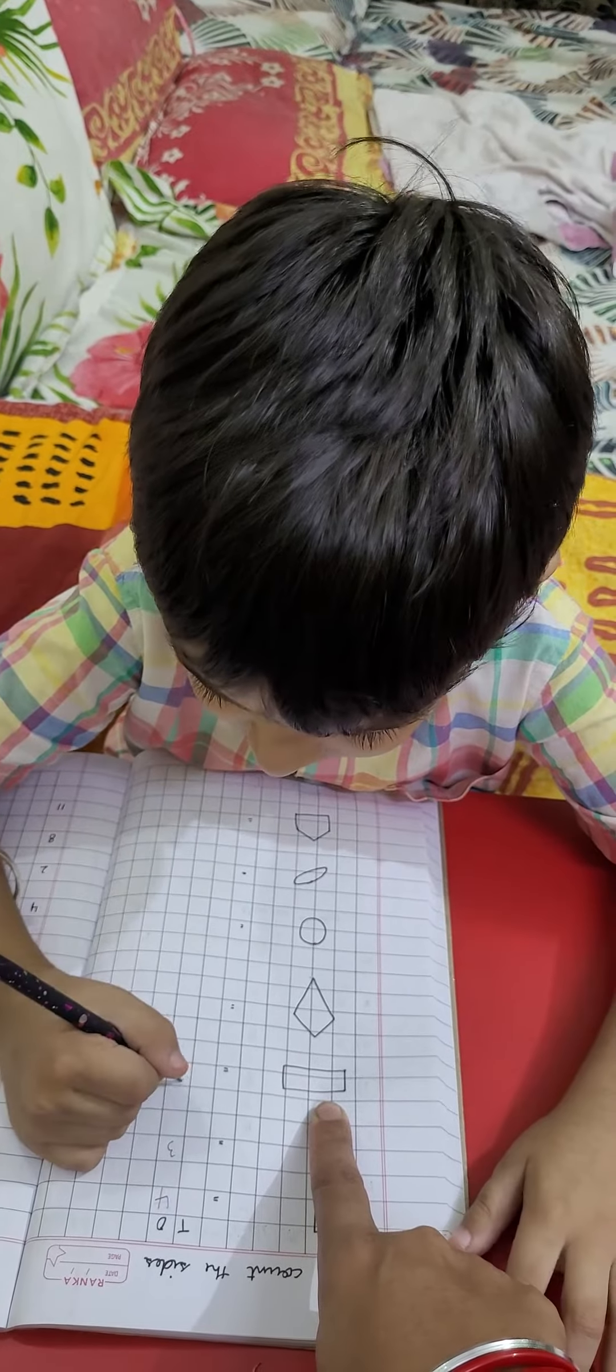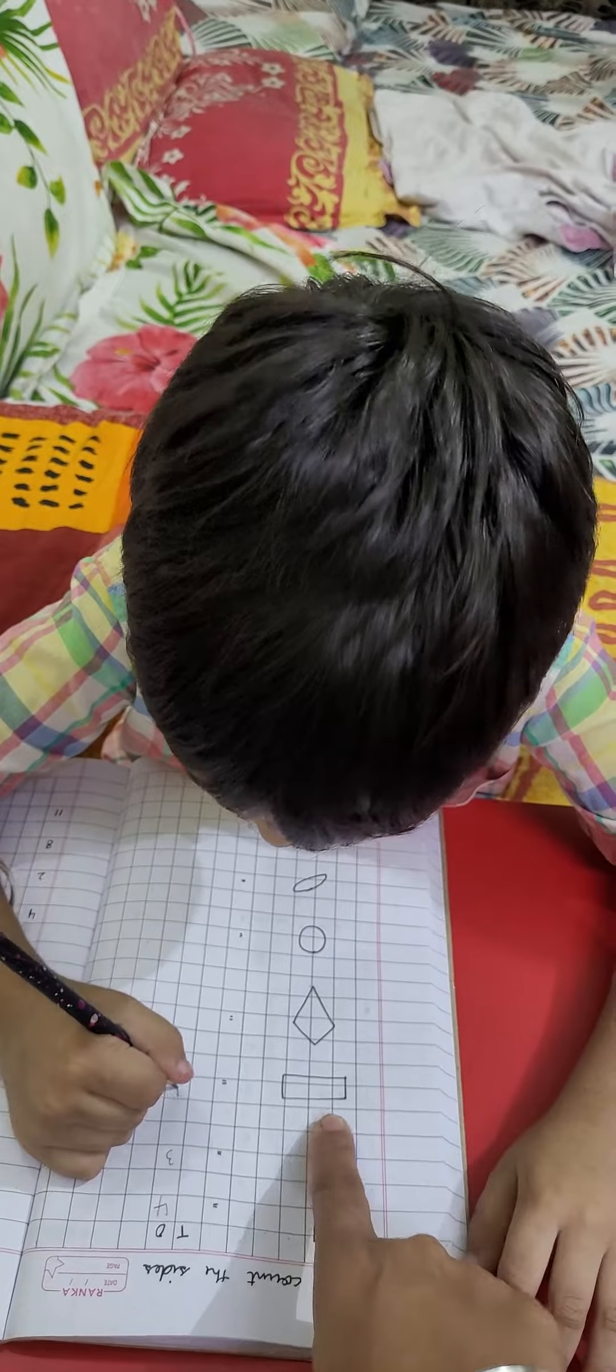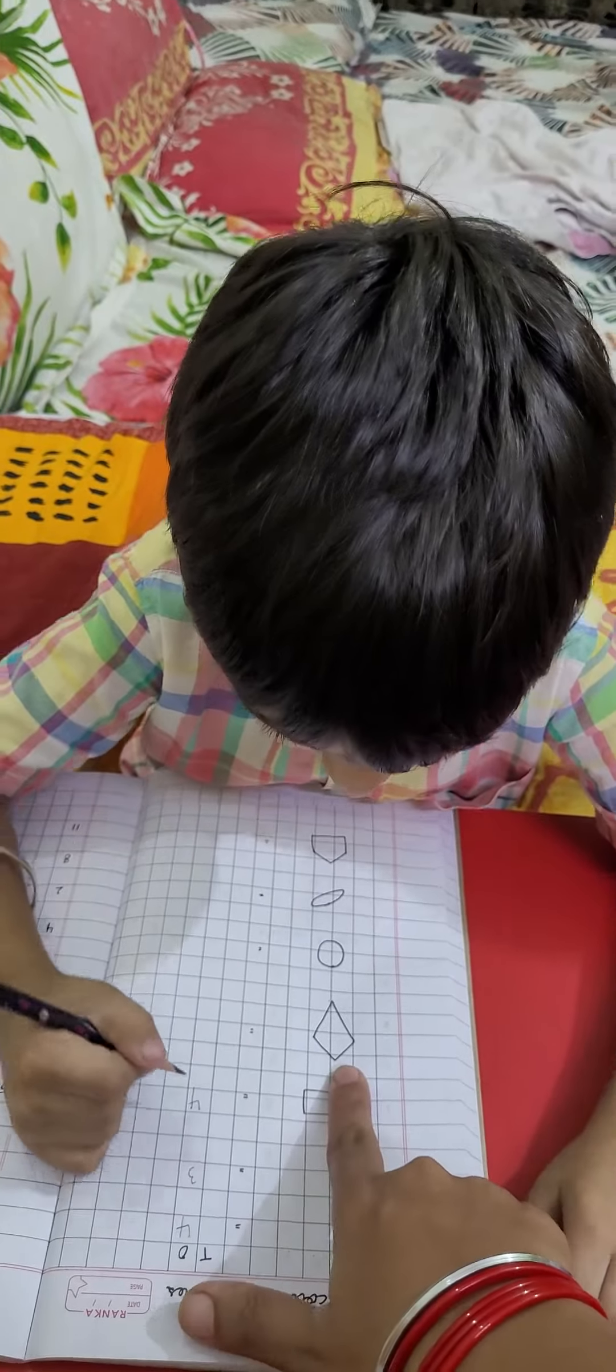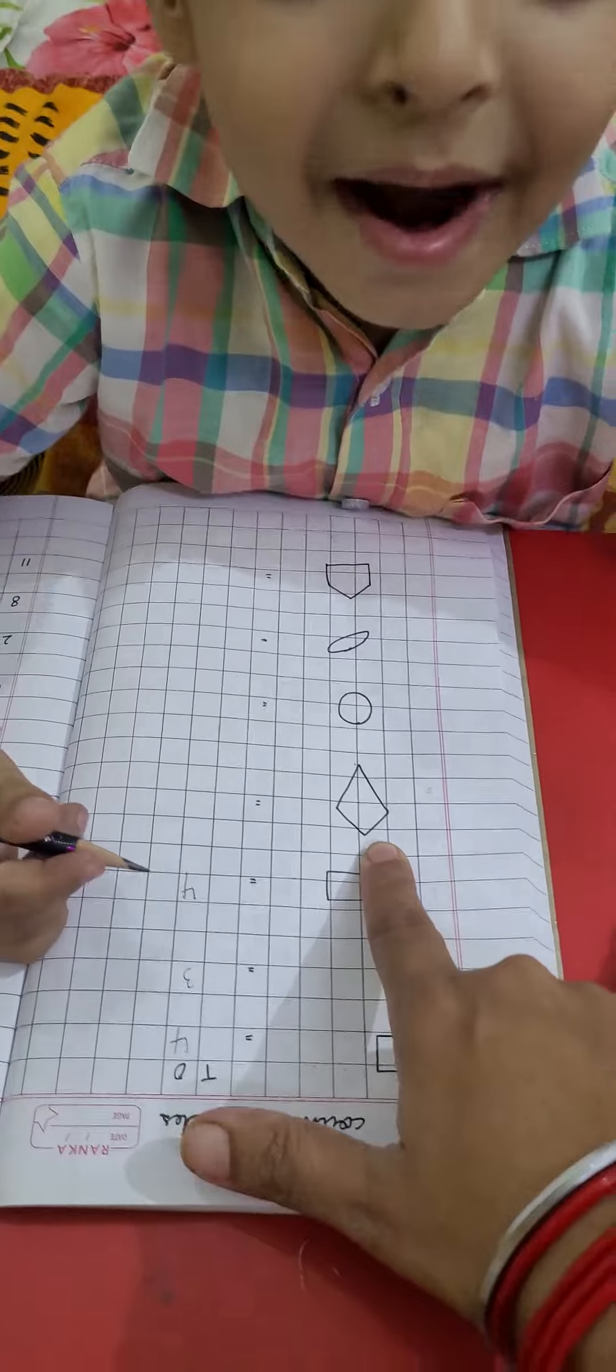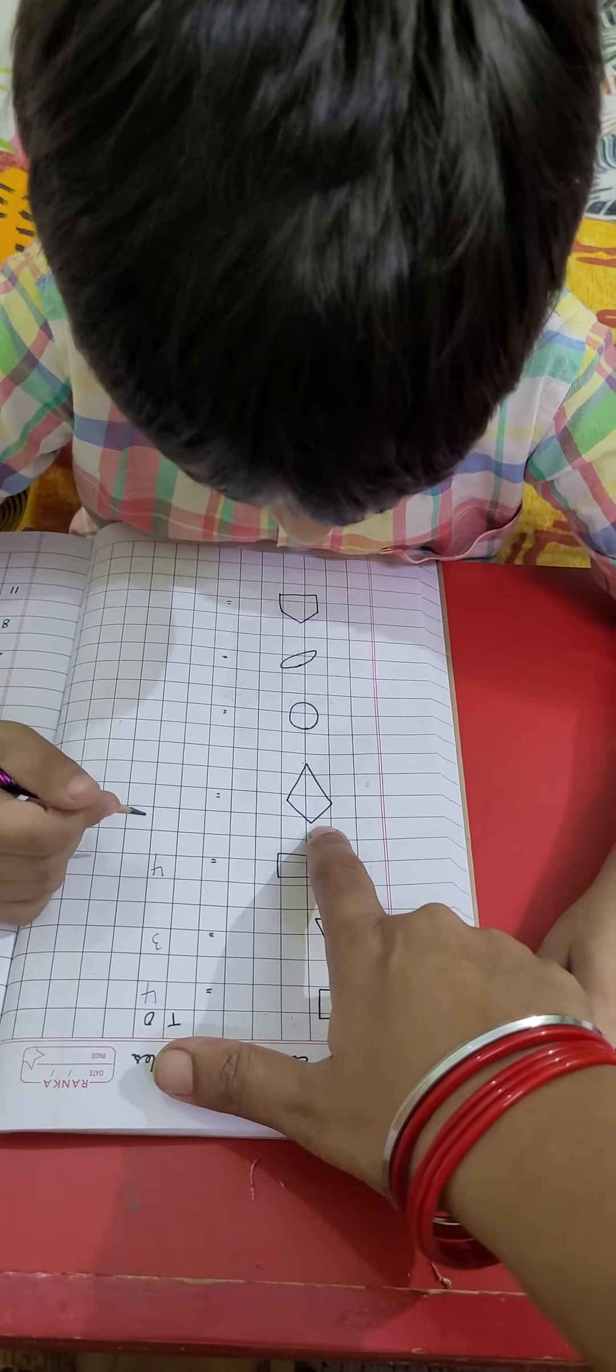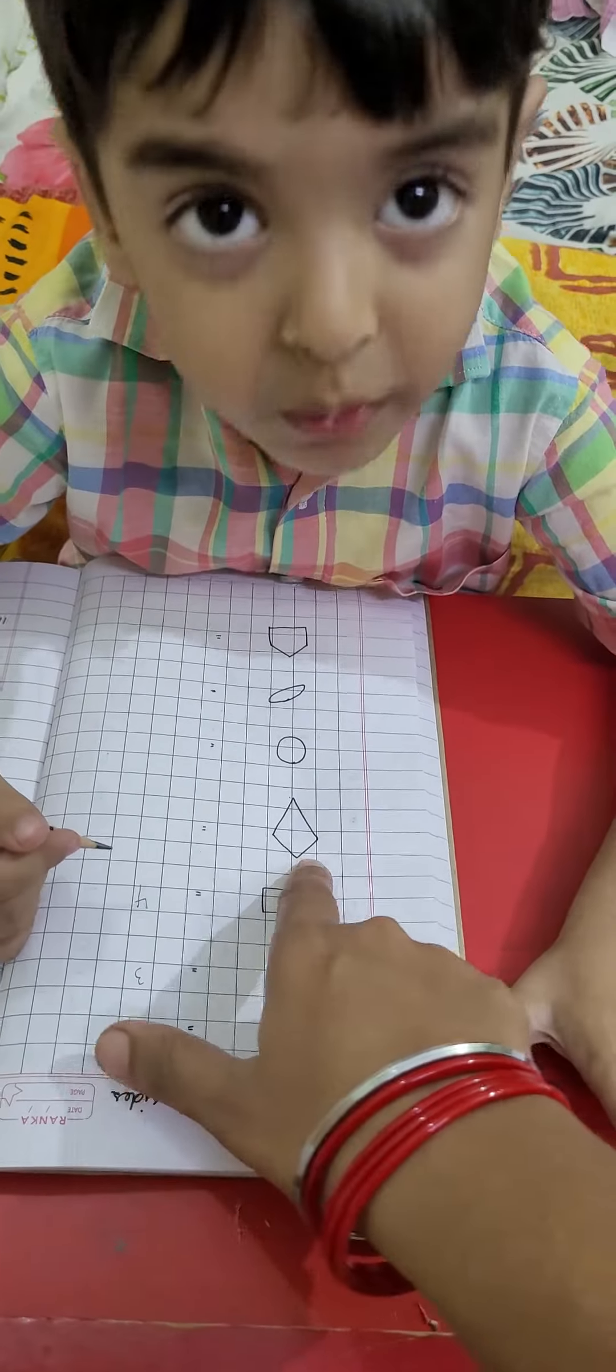And which shape is this? 1, 2, 3, 4. Very good. Now, which shape is this? Diamond. How many sides are there? 1, 2, 3, 4. Very good.